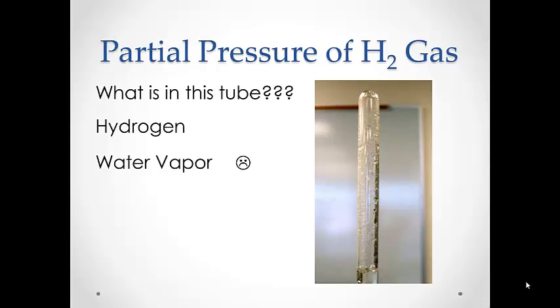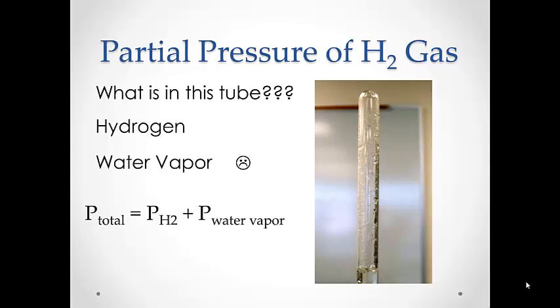Of course we can't physically separate the two, but lucky for us, we know that the total pressure inside the tube is equal to the sum of the partial pressures of the two gases that are present. If we know the total pressure and we know the pressure of the water vapor, then we can solve for the pressure of the hydrogen gas.